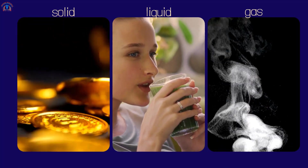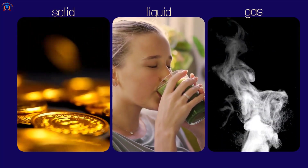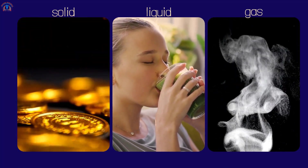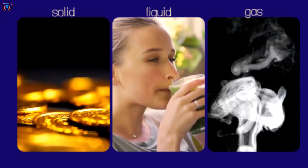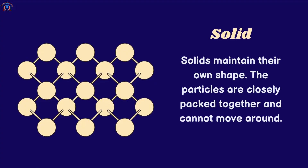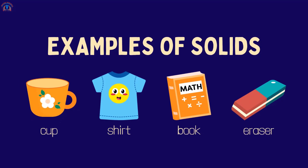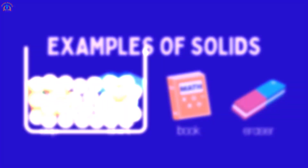Let's start to explore them one by one. Solids maintain their own shape. The particles are closely packed together and cannot move around. Here are a few examples of solids: cup, shirt, book, and eraser.